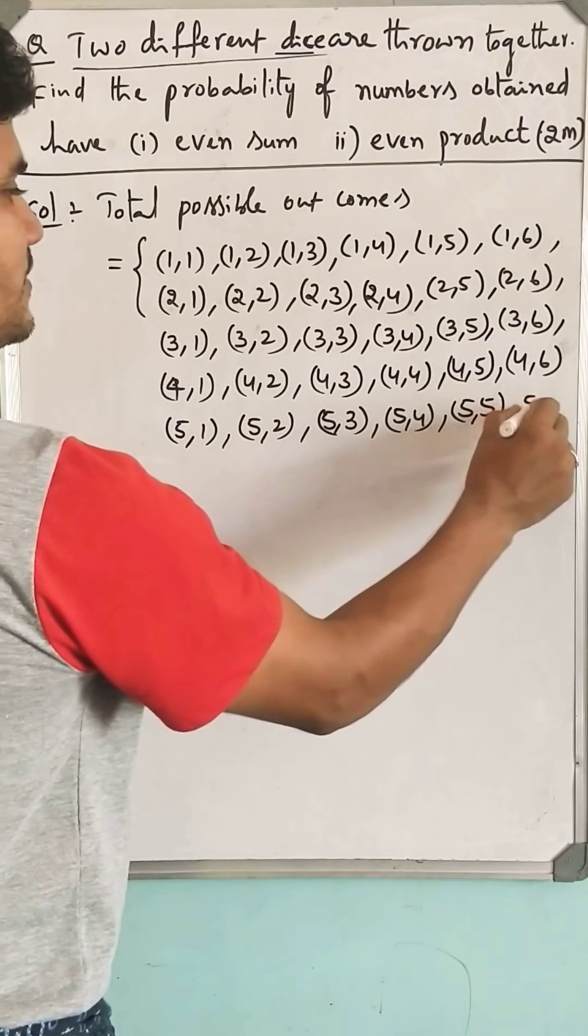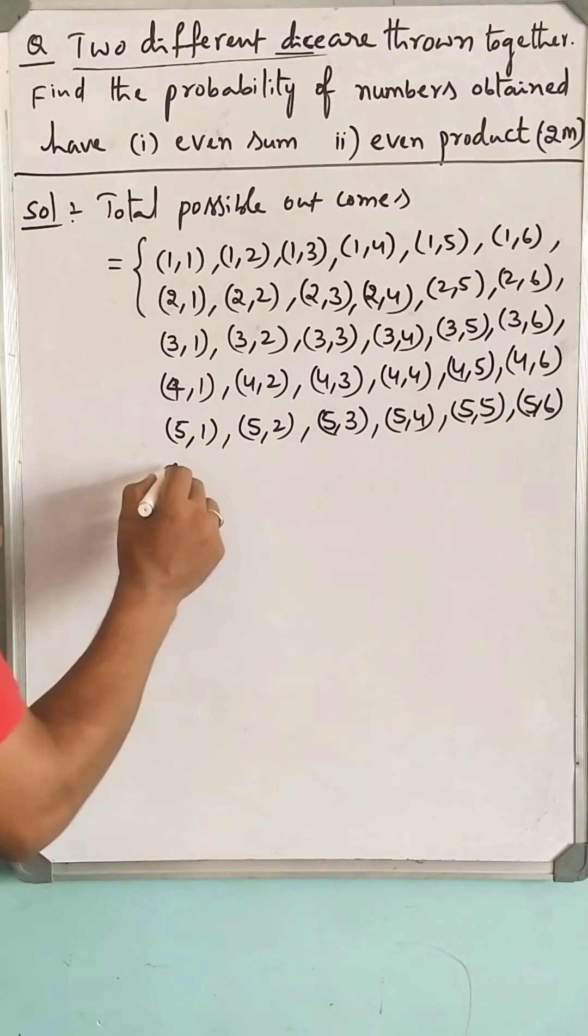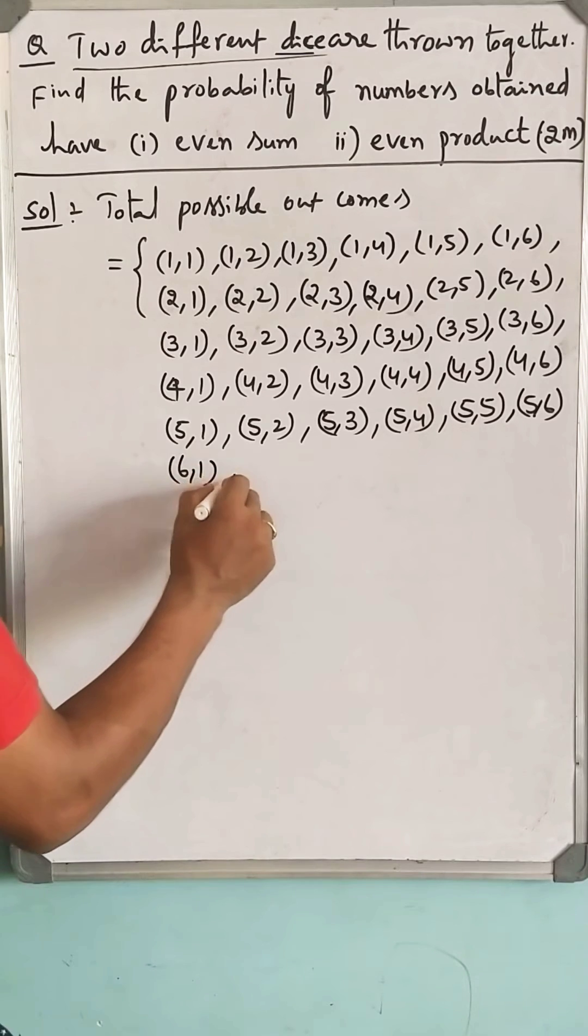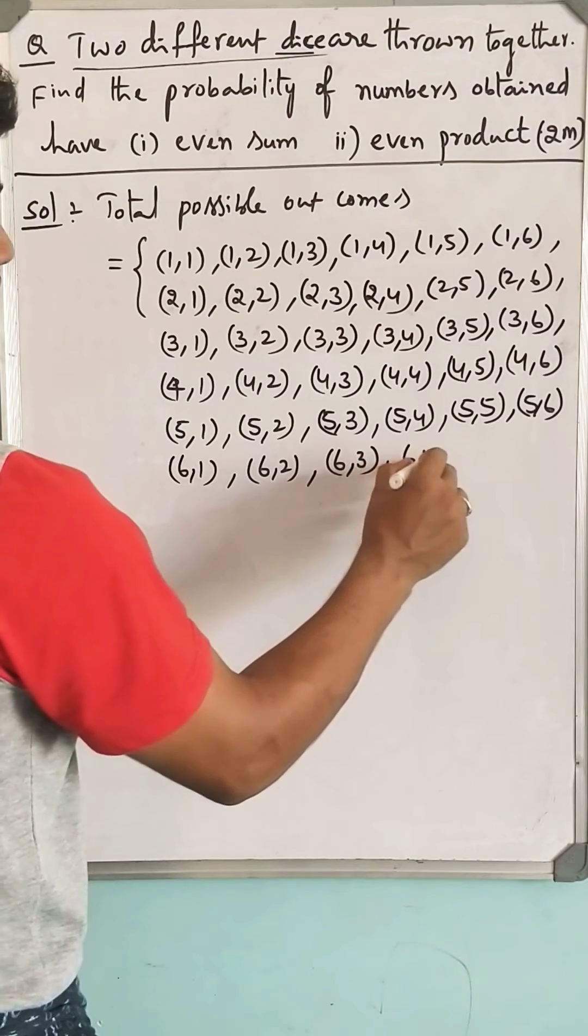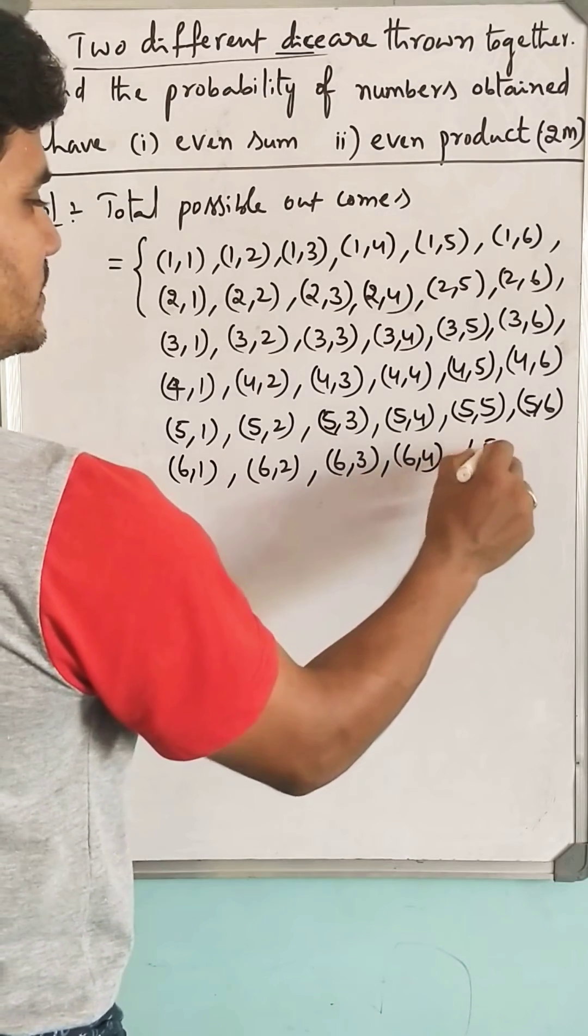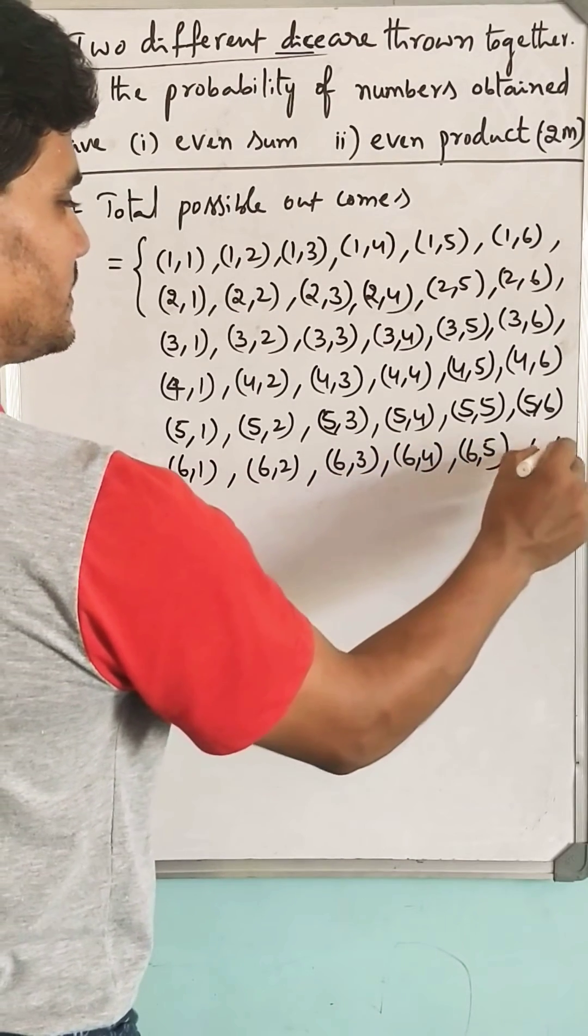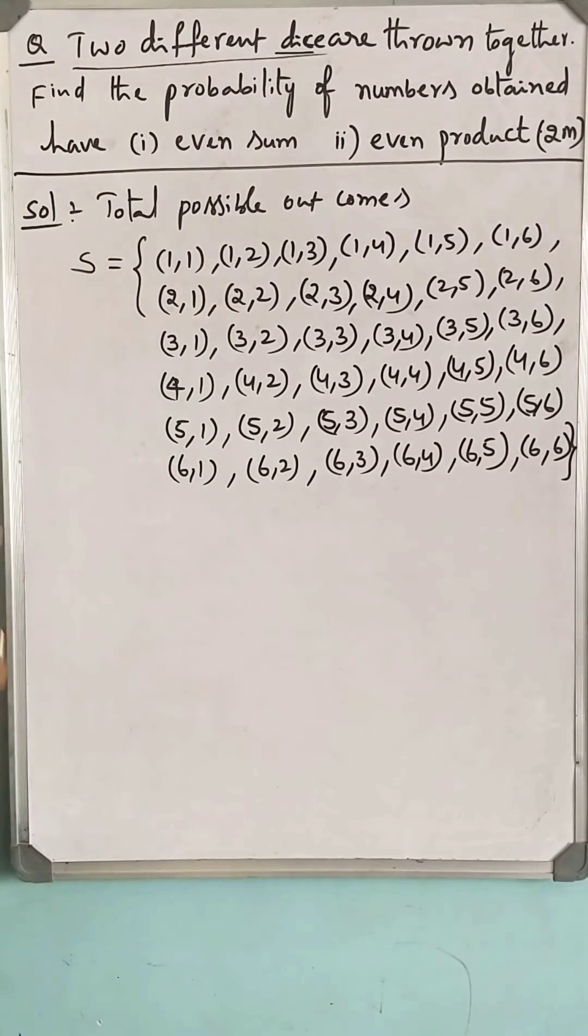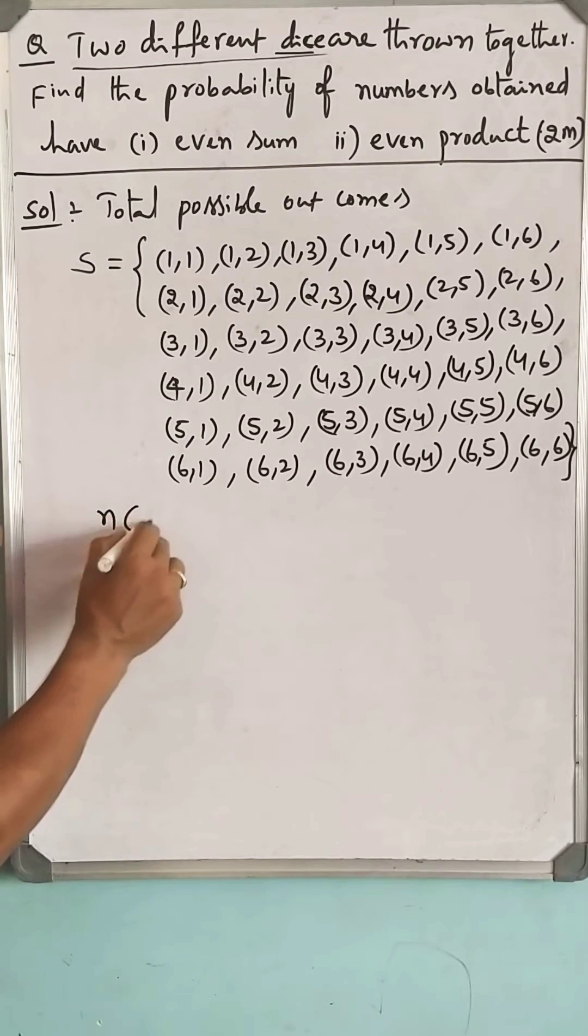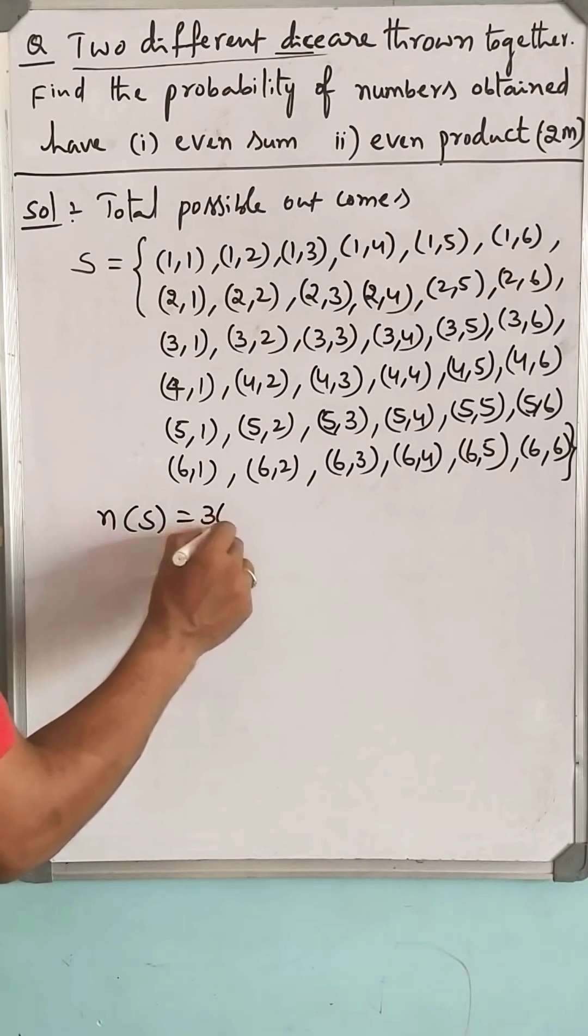(5,6), (6,1), (6,2), (6,3), (6,4), (6,5), (6,6). If you take, this is a sample space. Total number of outcomes are 36.